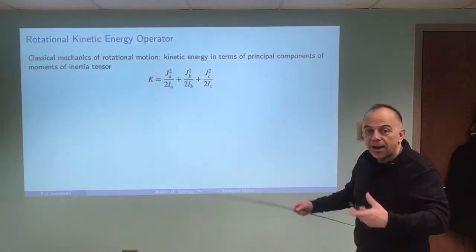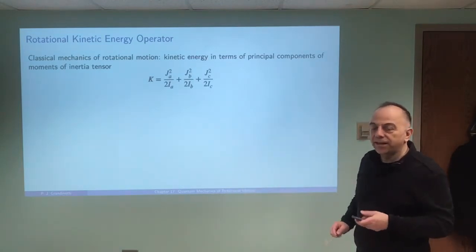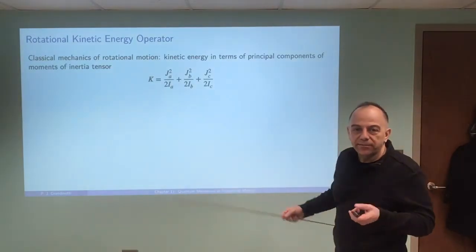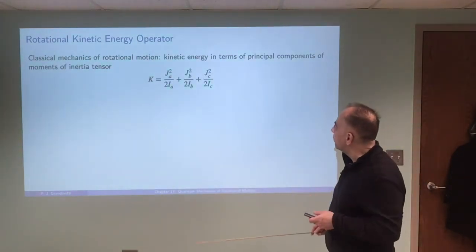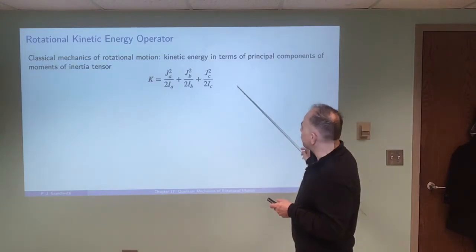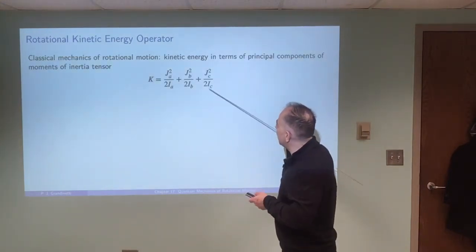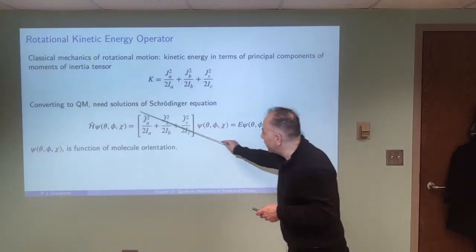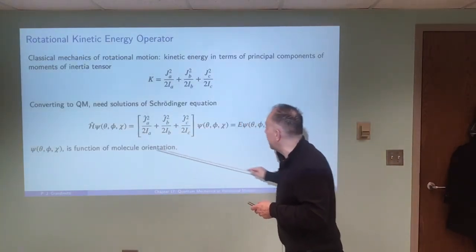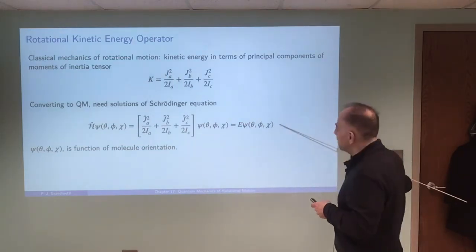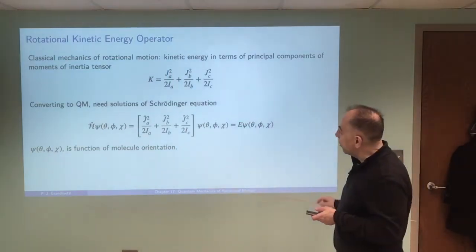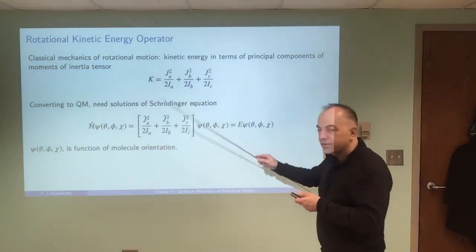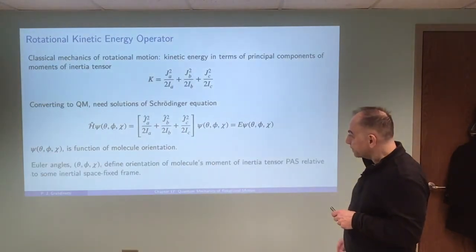Now we take those operators and construct our kinetic energy expression. The kinetic energy from Chapter 4 for the classical description of rotational motion is used here — we simply put hats on the operators and write down the Schrödinger equation, H-hat ψ = Eψ, which gives us the differential equation we have to solve. We have those expressions for these operators from the previous slides, and the Euler angles in the solution define the molecule's orientation relative to the space-fixed frame.